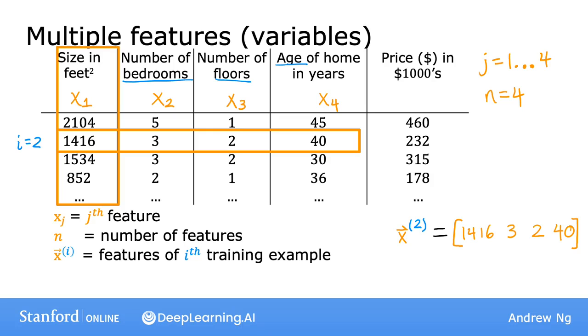To refer to a specific feature in the ith training example, I will write x superscript i subscript j. For example, x superscript 2 subscript 3 will be the value of the third feature, that is the number of floors in the second training example, which equals 2. Sometimes to emphasize that this x2 is not a number, but a list of numbers, a vector, we'll draw an arrow on top. You can think of the arrow as an optional signifier to emphasize that this is a vector and not a number.